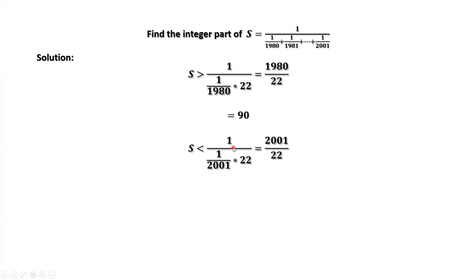This is 2001 divided by 22, which equals 90 and 21 over 22. This means S is less than 90 and 21 over 22.